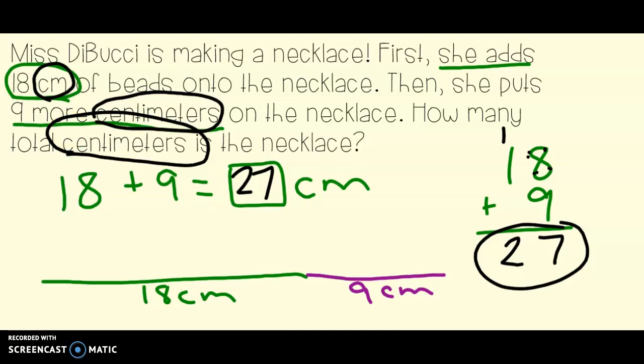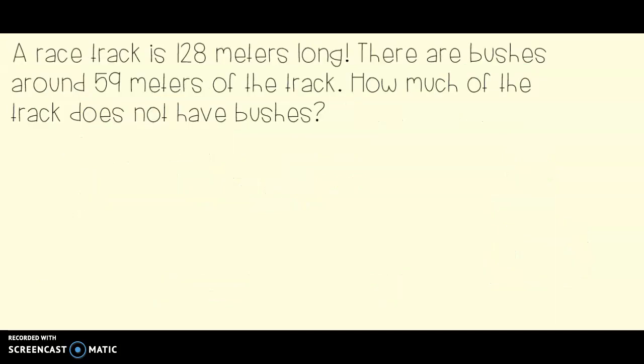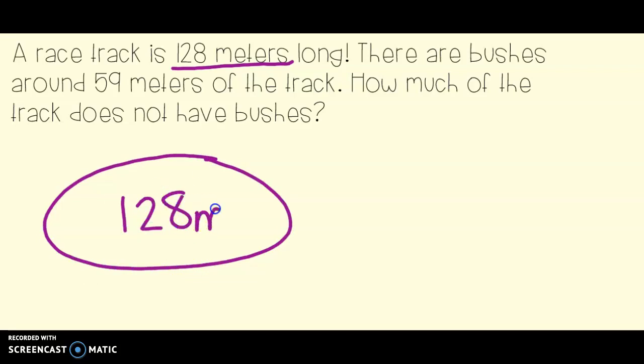This is just like a normal story problem or word problem. But instead of adding items like books or pencils or crayons, we're going to be adding different units of length. This one was centimeters. So we need to look in the problem for what our unit of length is. Let's look at the next one. A racetrack is 128 meters long. There are bushes around 59 meters of the track. How much of the track does not have bushes?